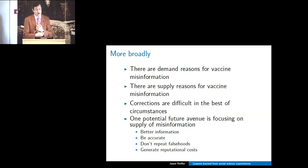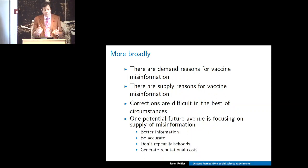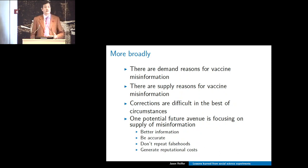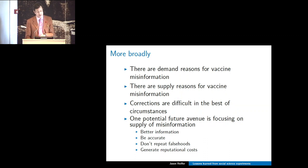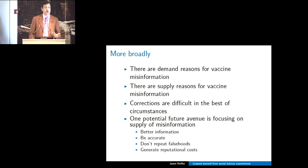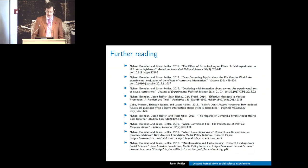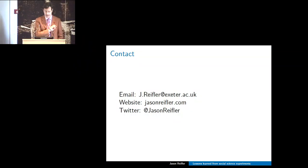More broadly, there are demand-side reasons for vaccine misinformation—people who are hesitant have demand to maintain those beliefs. There are also supply-side reasons—political elites, celebrities, or others who want to spread vaccine misinformation. Corrections are difficult in the best of circumstances. What Brendan and I have been focusing on in our more directly political work is: how can we change the supply of misinformation? How can we get better information out there and generate reputational costs for the spread of misinformation? Thank you.